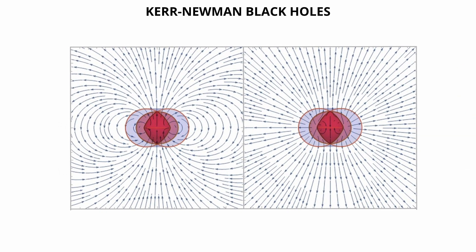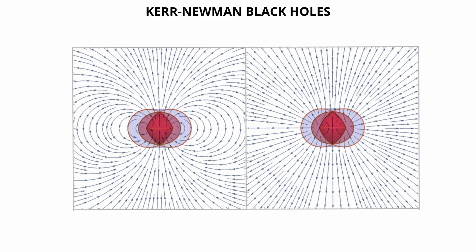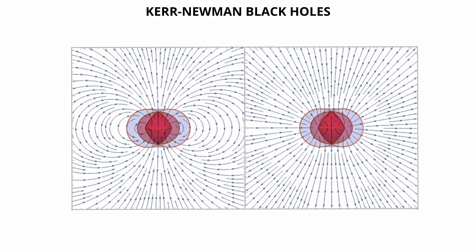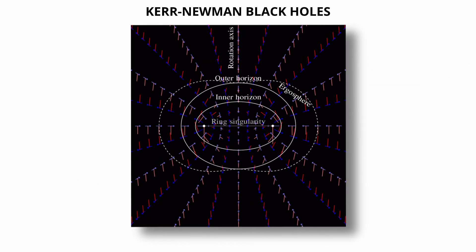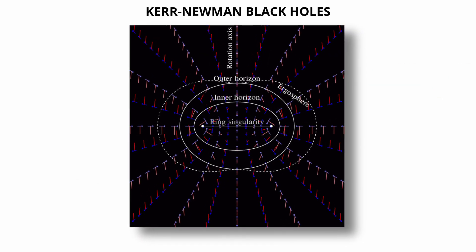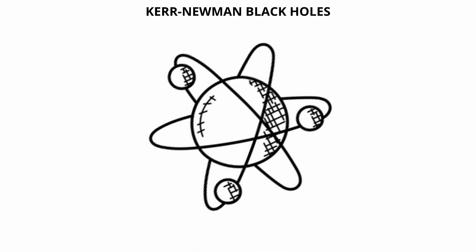Charged and rotating black holes produce powerful electromagnetic fields, which influence the motion of charged particles in their vicinity. They may also be capable of generating jets of high-energy particles and intense radiation, particularly when surrounded by magnetized accretion disks. These characteristics make Kerr-Newman black holes useful in modeling astrophysical processes involving high-energy emissions.